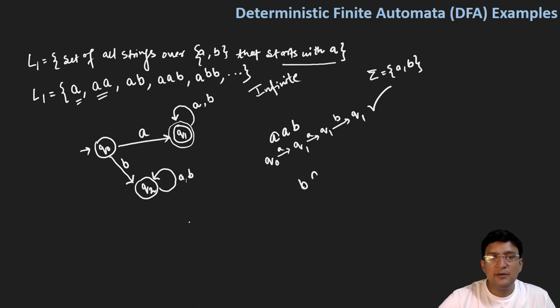Similarly, let's take a string which is to be rejected. For example, if a string starts with 'b', this string will be rejected. So we start our transition from state Q0, with symbol 'b' I reach to state Q2, and then with symbol 'a' I remain at state Q2. And Q2 is not the final state, so it means the string BA has got rejected.